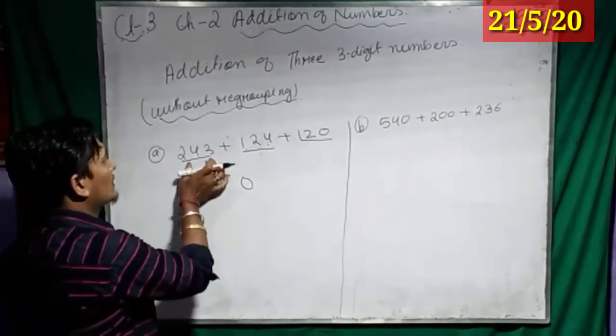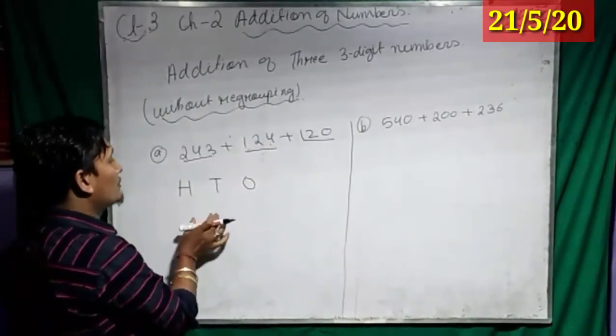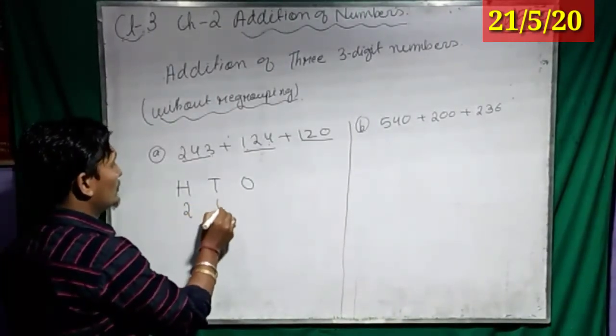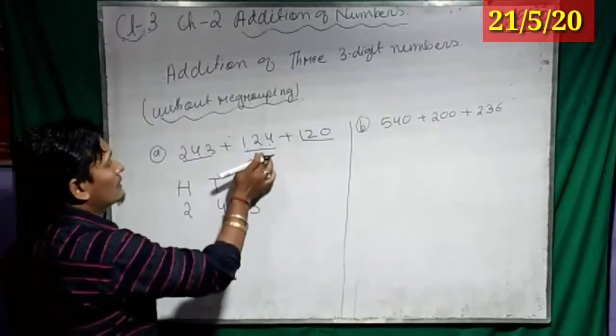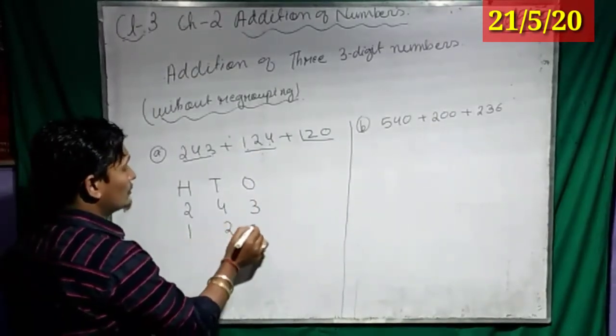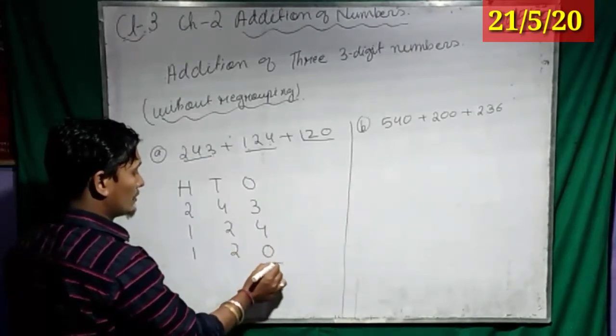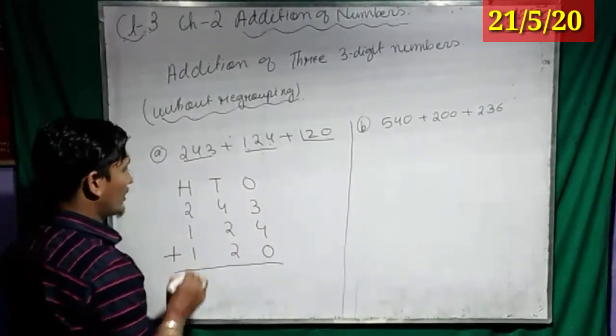Why? Because 3-digit number is there. So now you write your number below the place value chart. So, 243, then 124, then 120. Now, 80.